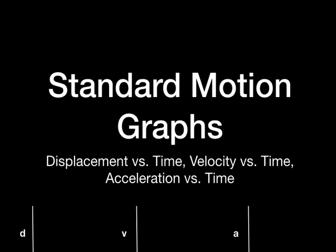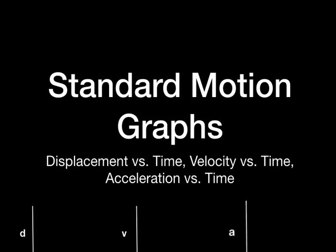Let's spend a couple minutes talking about some of the most powerful tools that we have to analyze motion. When we analyze motion, we typically graph the motion of the objects, and the three common graphs are the distance versus time graph, the velocity versus time, and the acceleration versus time graph. Each one of these will tell us different things about the motion of the object.